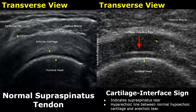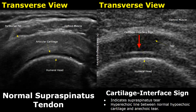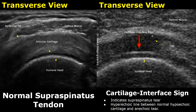A cartilage interface sign can sometimes occur in a supraspinatus tear. Normally we see the hypoechoic articular cartilage in the usual manner, but when there is a tear, the interface between the normal cartilage and the tear becomes hyperechoic due to enhancement from the adjacent tear. This forms a hyperechoic line between the tear and the normal hypoechoic cartilage, and can indicate a supraspinatus tear when seen.